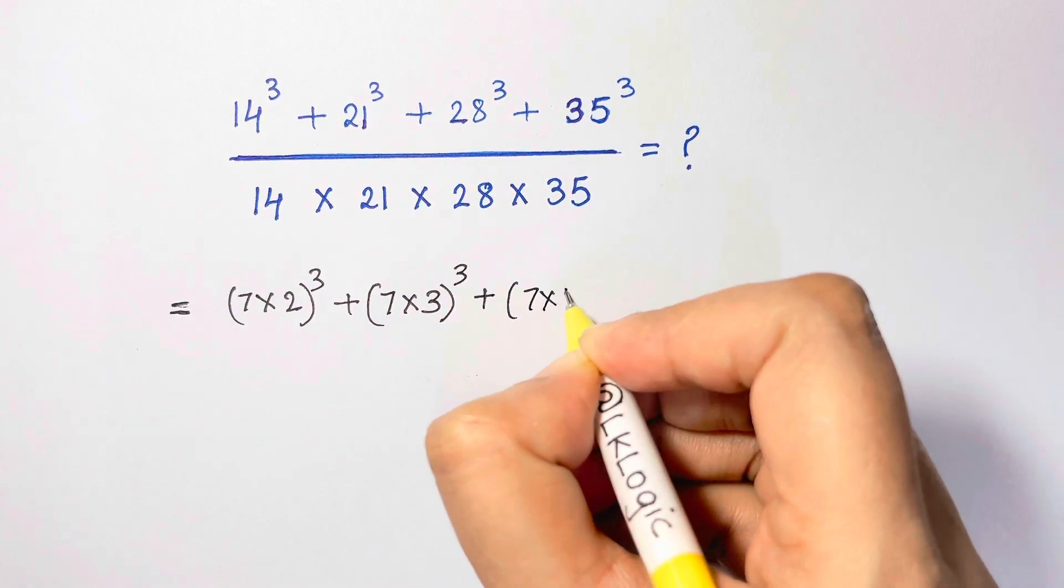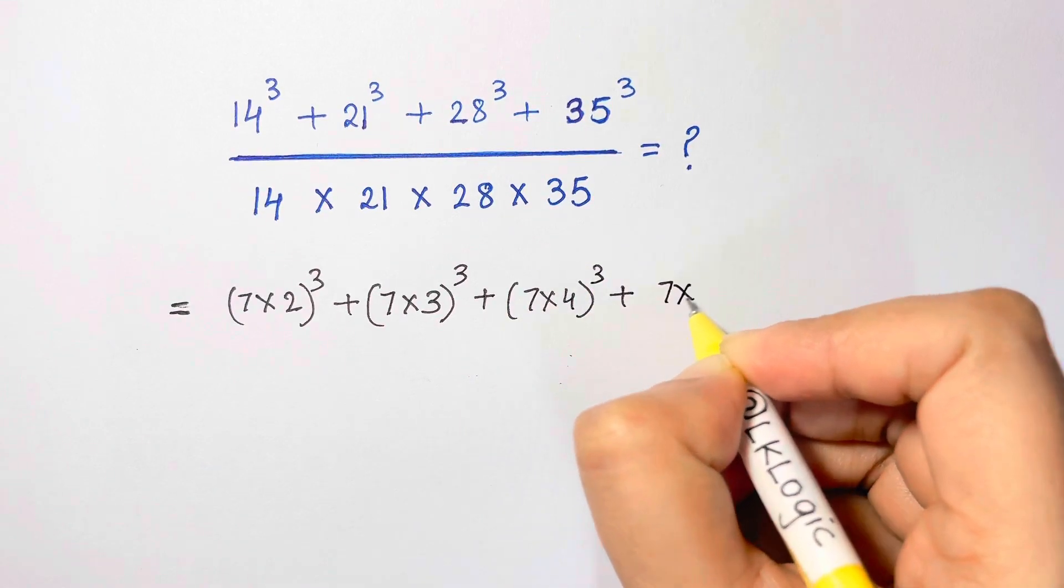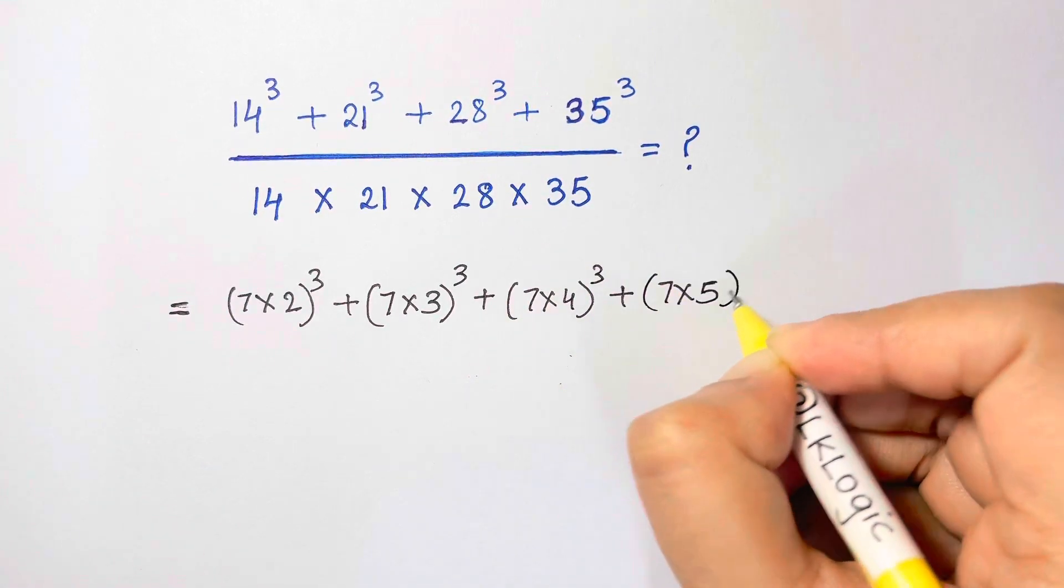Plus 7 times 4 the whole cube, plus 7 times 5 the whole cube.